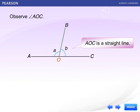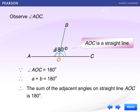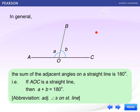Observe angle AOC. Angle AOC is actually a straight angle which equals 180 degrees. As a result, we can conclude that the sum of the adjacent angles on a straight line — AOC — is 180 degrees. So A plus B equals 180 degrees. In the figure, if AOC is a straight line, then A plus B equals 180 degrees.